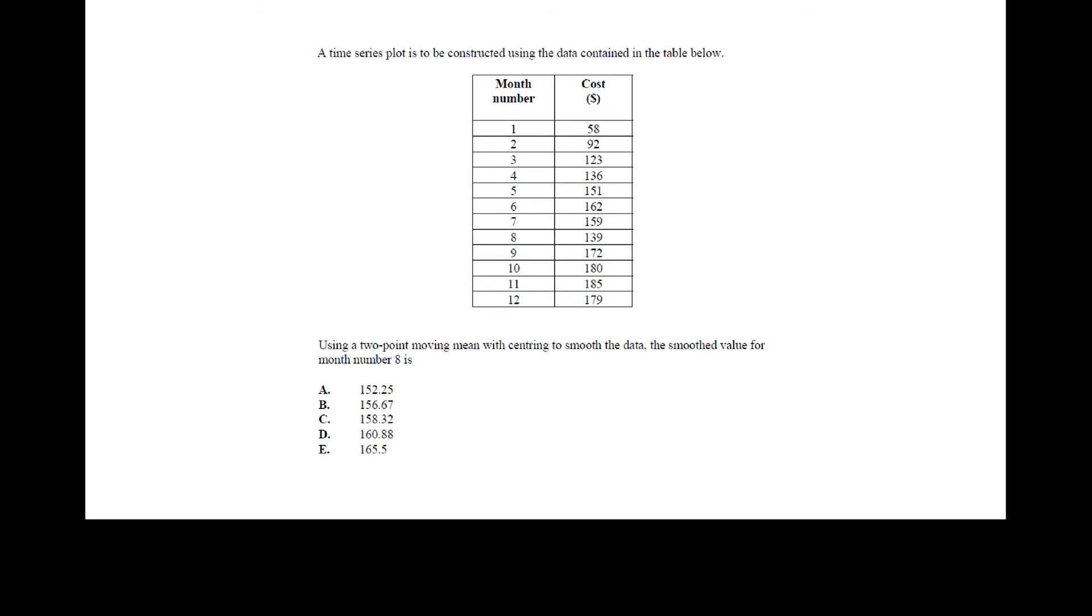Okay so the last type of question i'm going to look at is one which involves smoothing so here we have a time series plot is to be constructed using the data contained in the table below we have months and cost using two point moving mean with centering to smooth the data the smooth data value for month eight is now we could go through and do all of the values for the whole table but that would be time consuming and really all we need to concentrate on is the value that lines up with month eight. Now remember when you're doing an even number when it's two point or four point or six point which we rarely see if you're doing two or four point moving mean smoothing it usually will tell you that there is centering but you need to remember there's two steps involved.